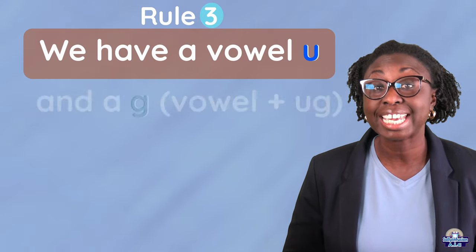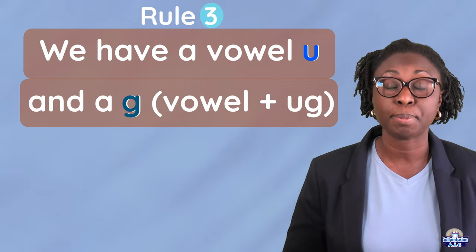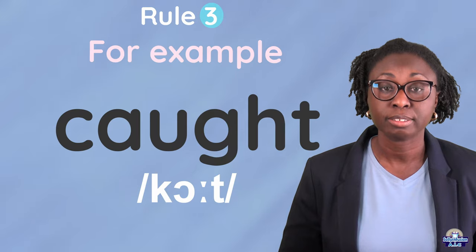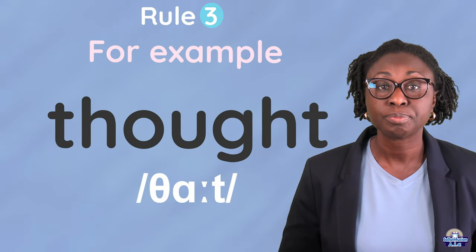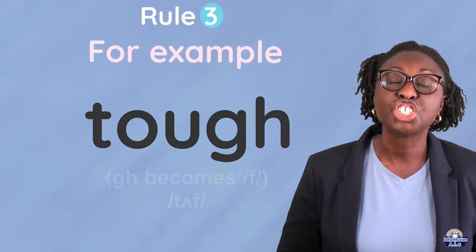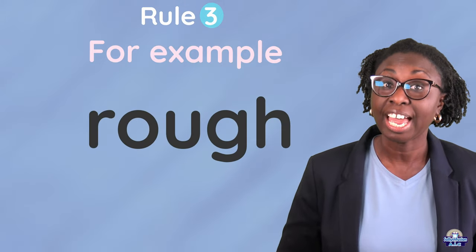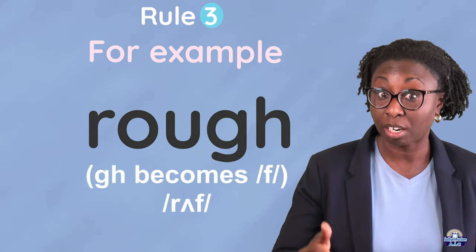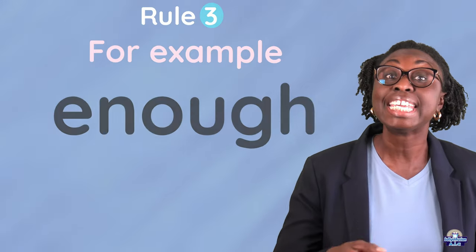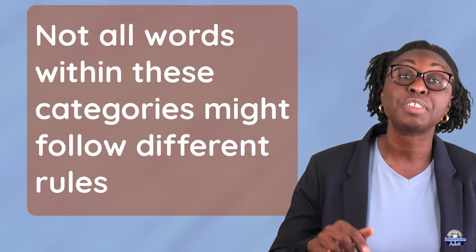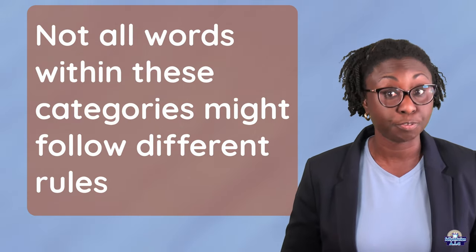The rule when we have a vowel, U, and G-H. For example: laugh, caught, thought. Tough — G-H becomes F. Rough — again, G-H becomes F. Enough — again, G-H becomes F. Please note that not all words within these categories might follow different rules.